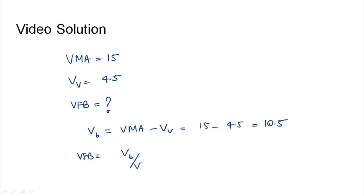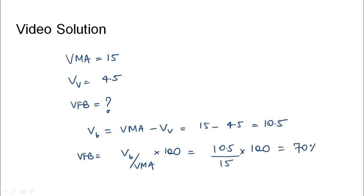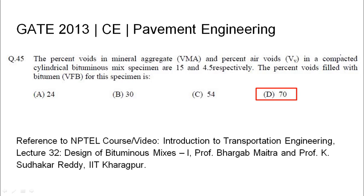Now we find VFB, which equals VB over VMA into 100. VB was obtained as 10.5, divided by VMA that is 15, into 100 — this turns out to be 70 percent. So the percent voids filled with bitumen for this specimen is 70, that is option D.